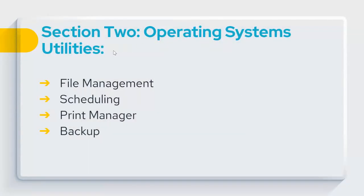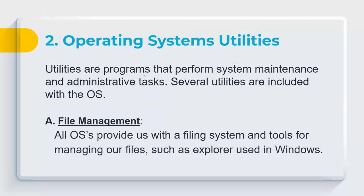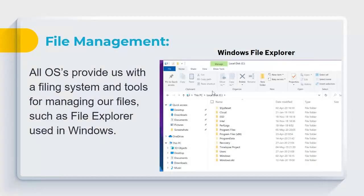Utilities are programs that perform system maintenance and administrative tasks; several are included free with your OS. File management utilities like Windows File Explorer provide a filing system and tools for managing files. You can create folders, move files, hide or unhide folders, and set files as read-only.